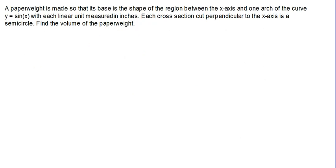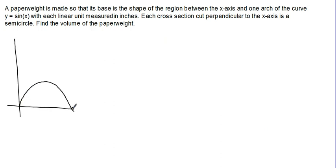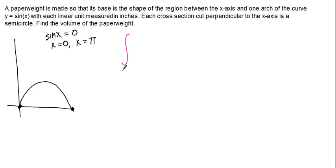The next one we're going to take a look at is a little bit different. This time we're looking at the function Y equals sine X, and we're looking at the region between the X-axis and one arch of sine X. We'll have to figure out our limits of integration on our own this time. When does sine X equal 0? Sine of X equals 0 at X equals 0 and again at X equals pi. So we're going to have the same limits of integration as the previous two problems — integrating from 0 to pi of the cross-sectional area.